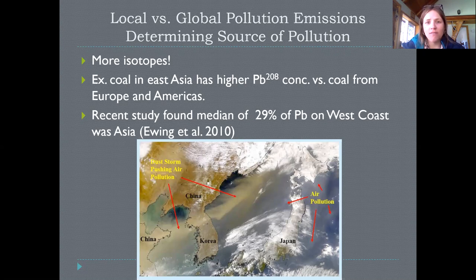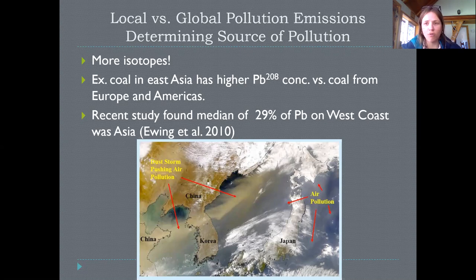In China and other parts of East Asia, they have lead with a weight of 208, which is a little different from the 207-weight lead in coal reserves in the Americas. So when coal containing this lead contaminant is burned in Chinese power plants and moves toward the Americas, we can see its source is not from US energy production. One recent study found that as much as 29% of the lead on the West Coast is East Asian in origin, showing just how globalized our atmospheric pollution situation is — and it's having health and environmental impacts here.